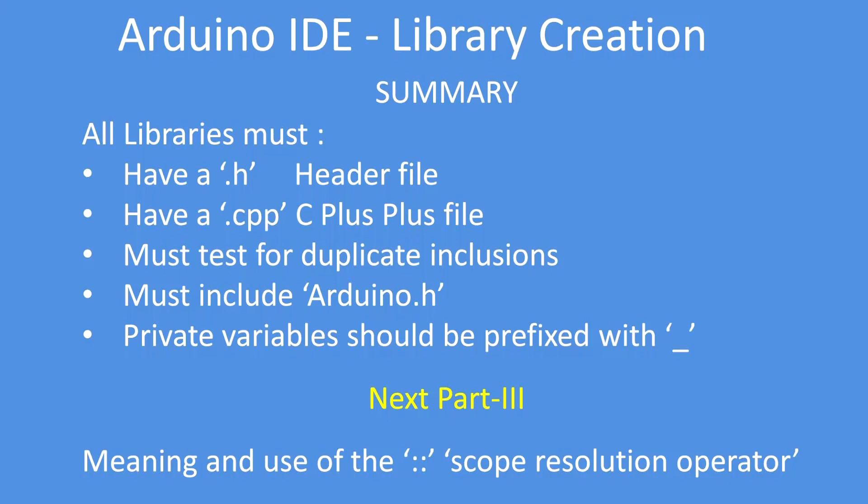So in summary, all libraries must have a dot H header file and a dot CPP C++ file. You must test for duplicate inclusions and you must include Arduino dot H. Private variables ideally should be prefixed with an underscore — it's a convention, not a requirement. In part three, we cover the meaning and use of the scope resolution operator.